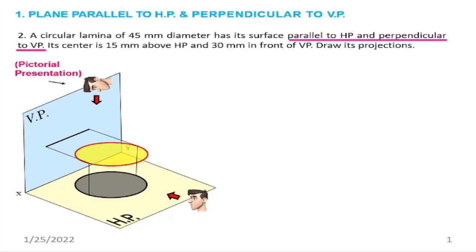The plane position is identified — that is the first thing. So once the position is identified, the front view will be a line and the top view will show the plane.